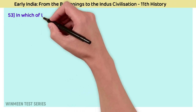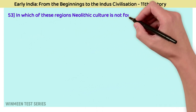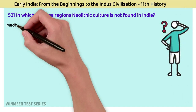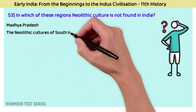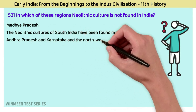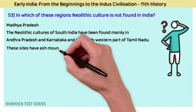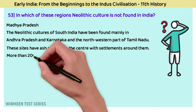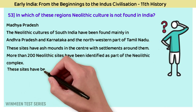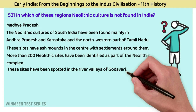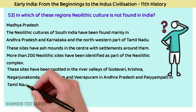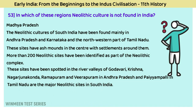Question 53: In which region is Neolithic culture not found in India? The answer is Madhya Pradesh. Neolithic cultures of south India are found mainly in Andhra Pradesh and Karnataka and the north-western part of Tamil Nadu. These sites have ash mounds in the center with settlements around them. More than 200 Neolithic sites have been identified as part of the Neolithic complex, spotted in the river valleys of Godavari, Krishna, Nagarjunakonda, Ramapuram, and Veeraburam in Andhra Pradesh, and Paiyampalli in Tamil Nadu as major Neolithic sites in south India.